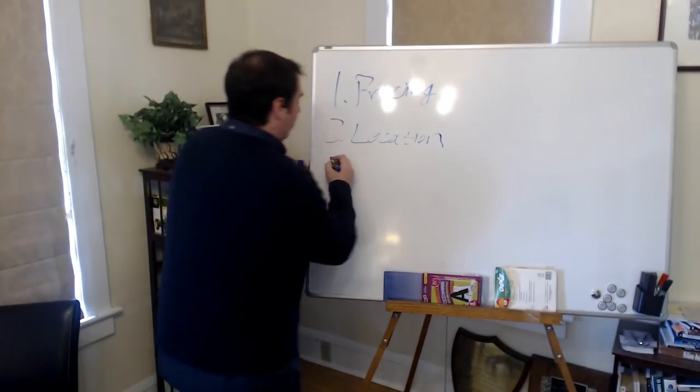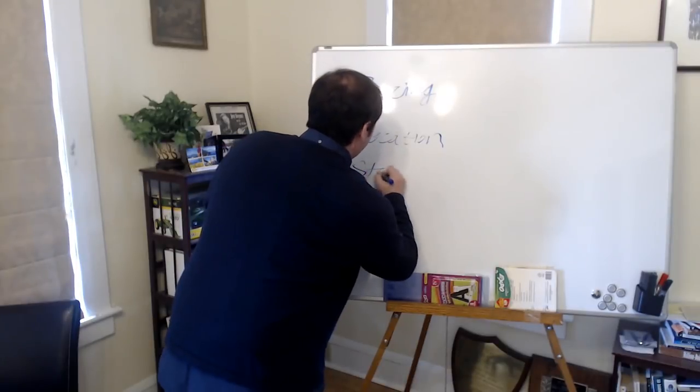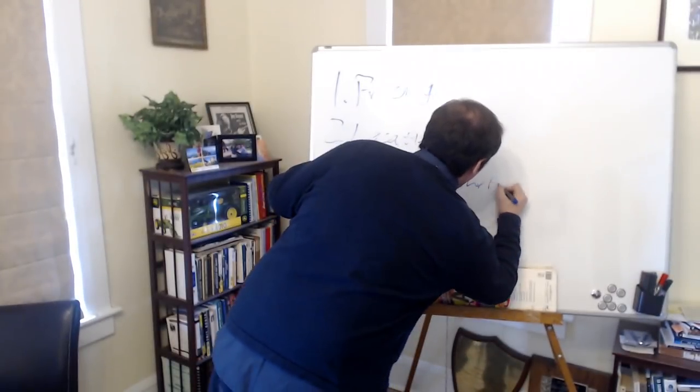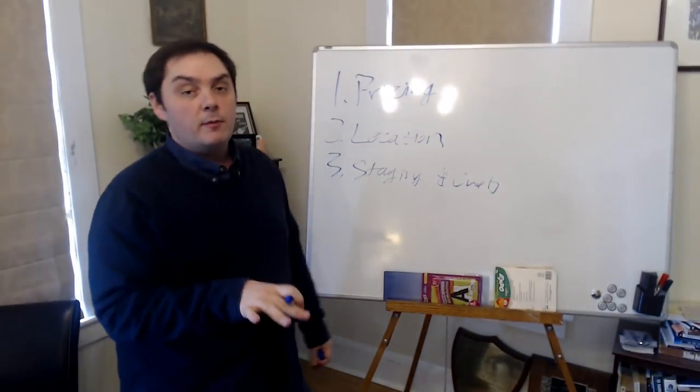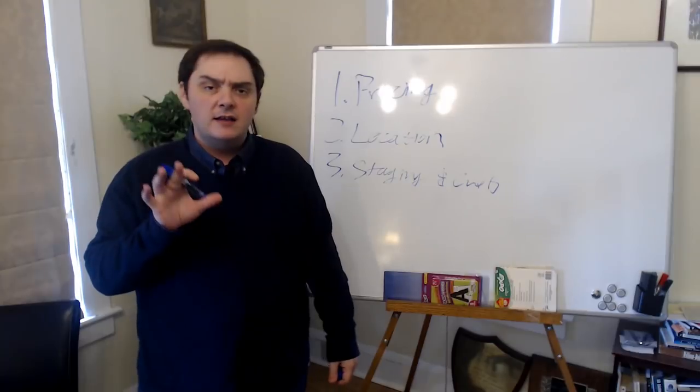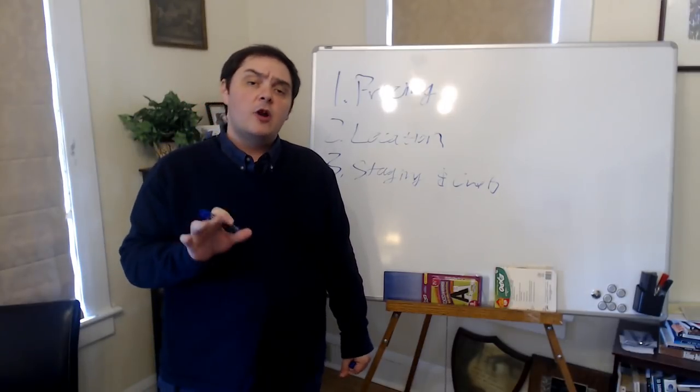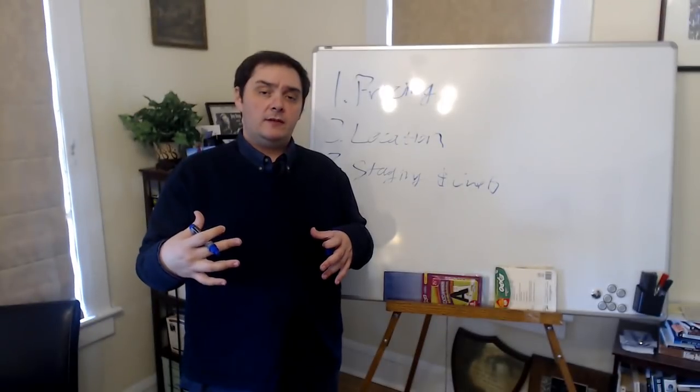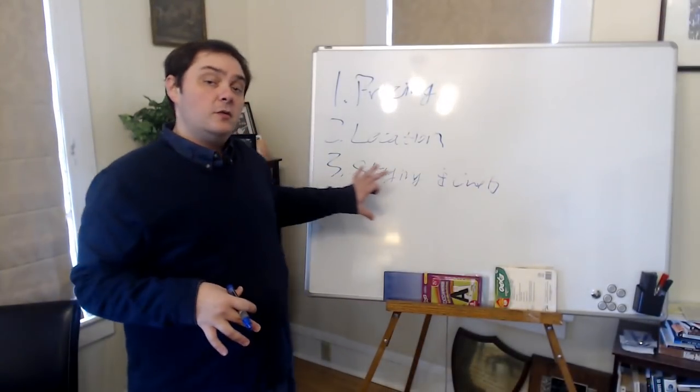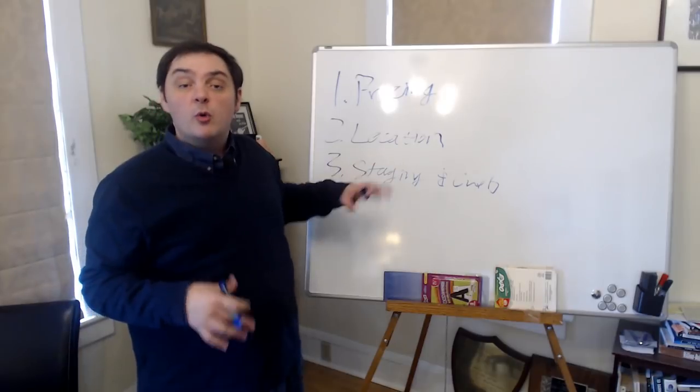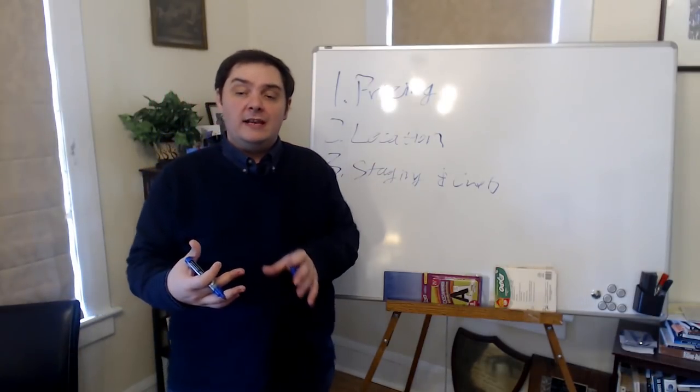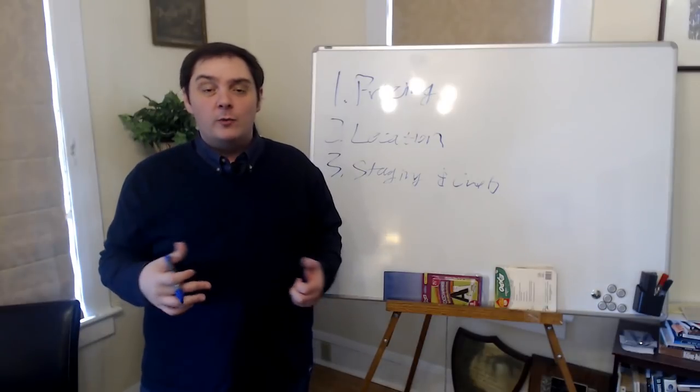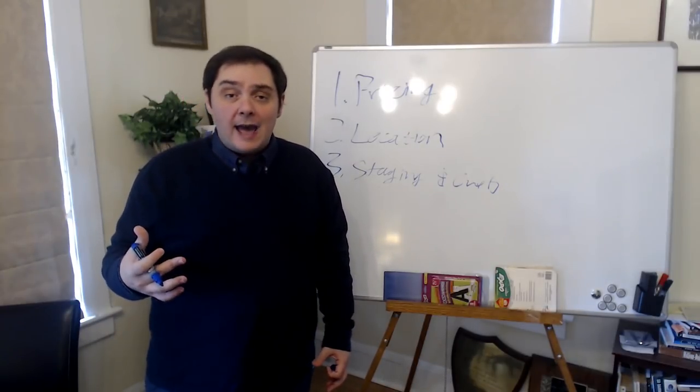Now if those two don't work, we're going to go to number three which is staging and curb appeal. Staging and curb appeal is another big one and another conversation that you want to have with the seller right up front, right with the listing presentation, about what they need to be doing to possibly stage their home or make it sell for a little bit more money. Sometimes this might include actual fixes to the home. We always hope it doesn't, but it does happen.